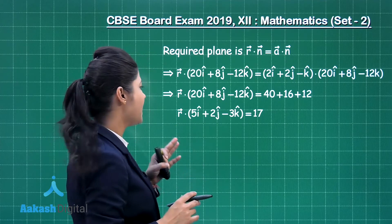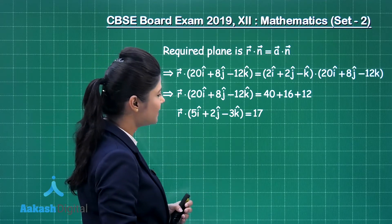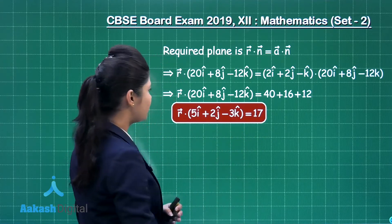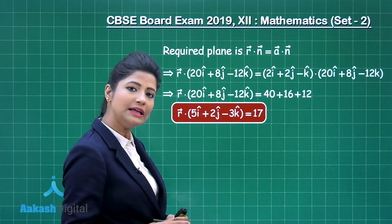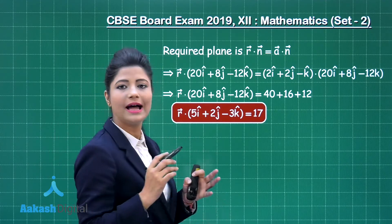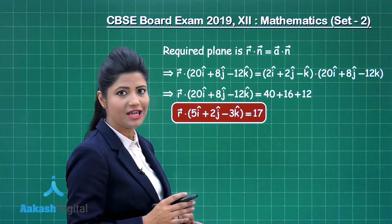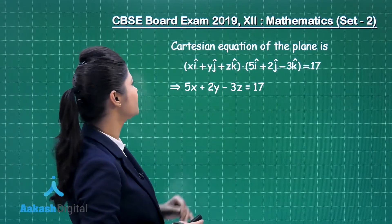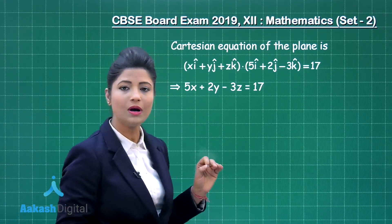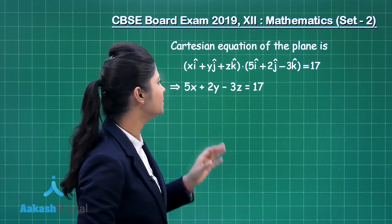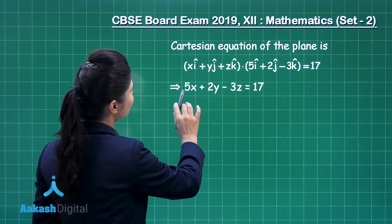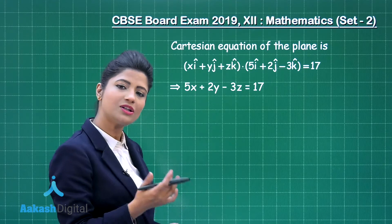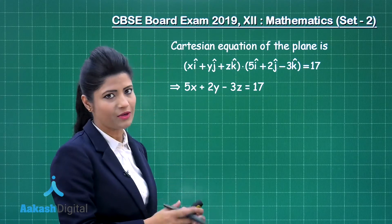The required vector equation of the plane is R · (5i + 2j - 3k) = 17. To obtain the Cartesian equation, substitute R = xi + yj + zk. Using i·i = 1, j·j = 1, k·k = 1, this simplifies to 5x + 2y - 3z = 17. So we have obtained both the vector equation and the Cartesian equation — the first part of the question is done.